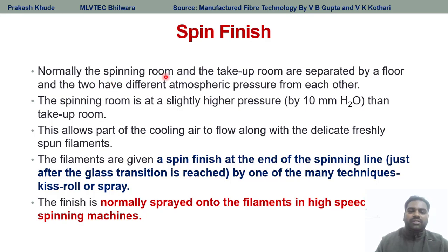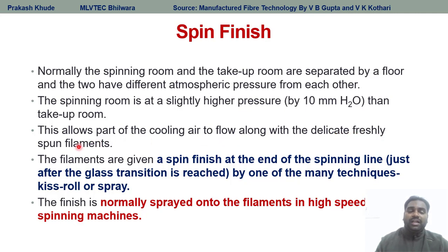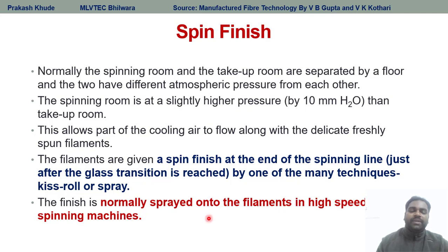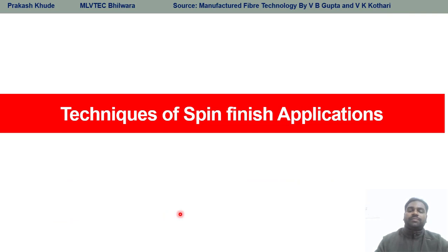Generally in a melt spinning line, the spinning room and take-up room are normally separated by a floor, which has two different atmospheric pressures. Generally the spinning room atmospheric pressure is slightly higher than that of the take-up room, and this will allow part of the cooling air to flow along the delicate freshly spun filament. The filament is given the spin finish at the end of the spinning line, and it can be applied by different techniques — that could be the kiss roll technique, the metering technique, the dipping method, or spray technique.